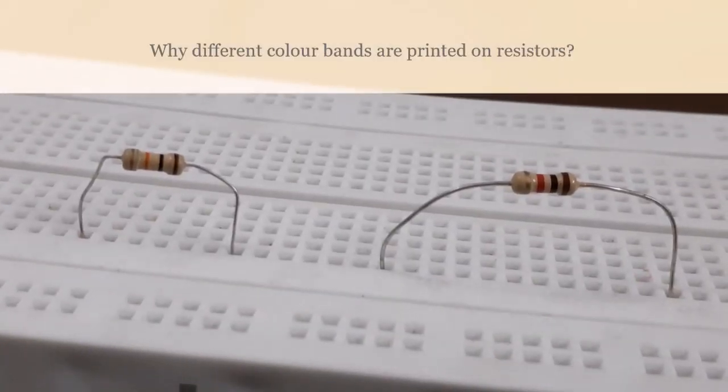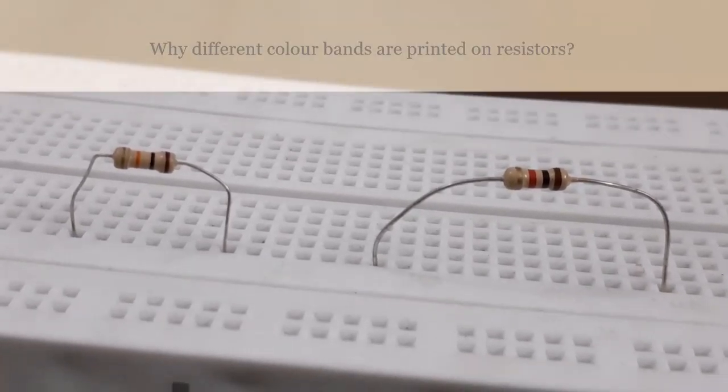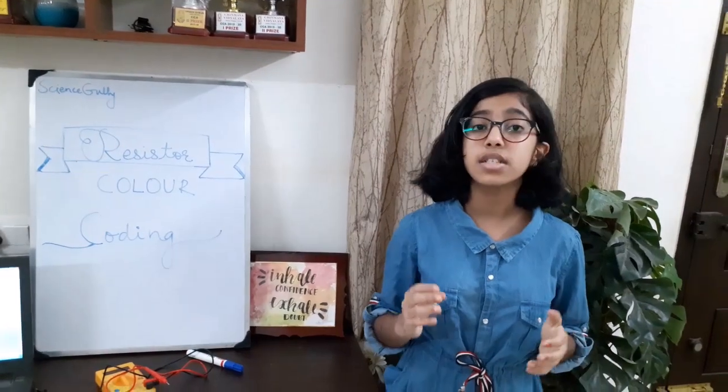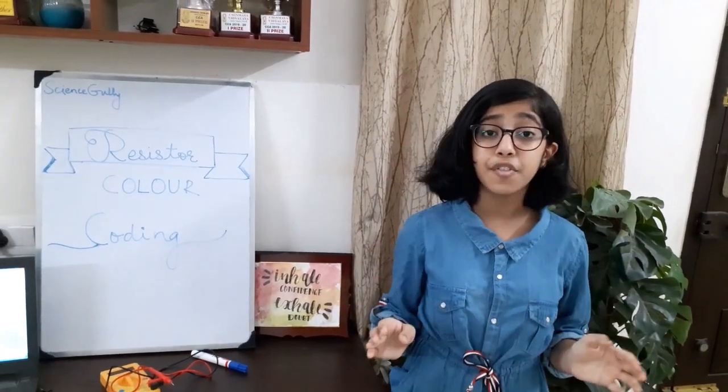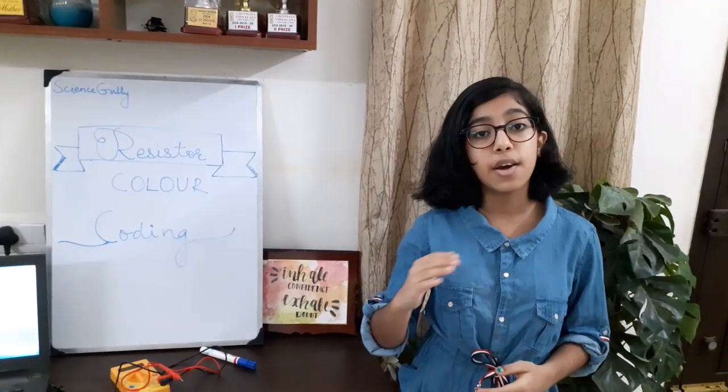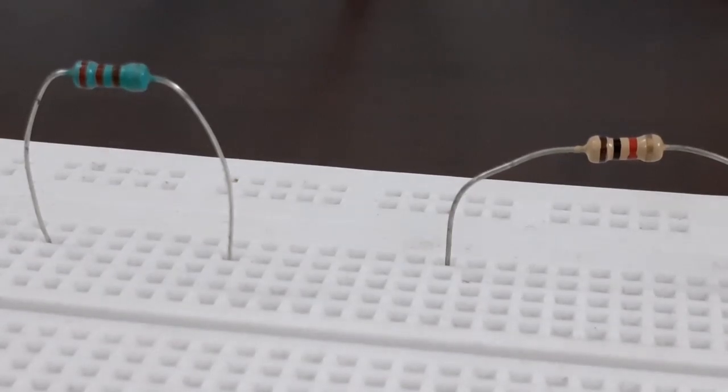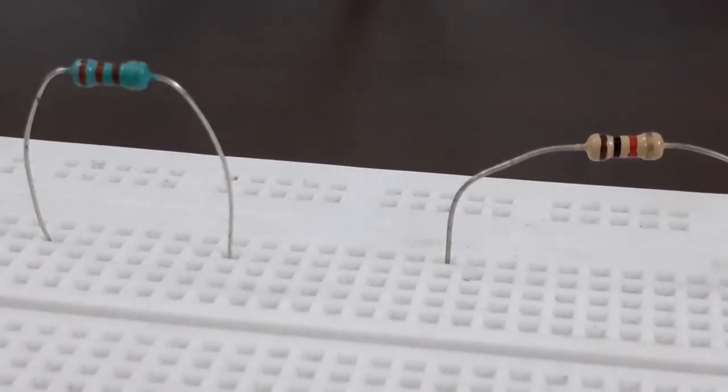Resistors come with different color bands. Do you know why these color bands are printed on them? As resistors are very small, it is pretty difficult to print numbers or resistance values directly onto the surface of the resistor. Thus, instead of directly printing numbers onto the resistor, resistor color codes are used.